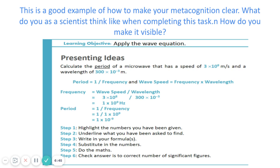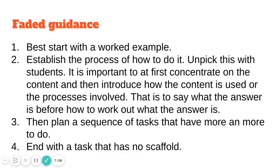Here's a really nice example to show that tangible next set of steps. It's a calculation in physics where all the calculation steps are shown within the worked example, but then the steps have been highlighted — do this, do that, then do this. That just provides the scaffold for students. There is an alternative to this, called faded guidance. We start with a worked example, establish the process of how to do something, and unpick the features with the students.